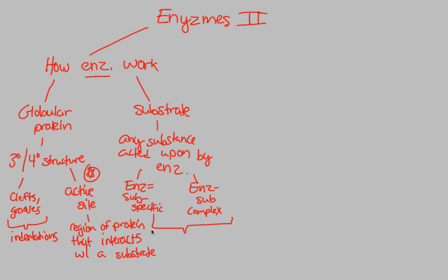Because enzymes are substrate-specific, there must be a specific substrate that attaches to that enzyme. A good example is sucrase — remember, the '-ase' ending tells us it's an enzyme. An enzyme specific to sucrose is called sucrase. Sucrase will only act on sucrose, which is a disaccharide made of glucose and fructose combined. The key point is that an enzyme combines with its substrate because it is substrate-specific.